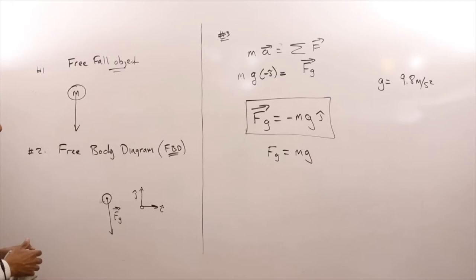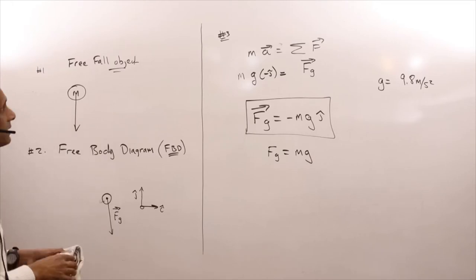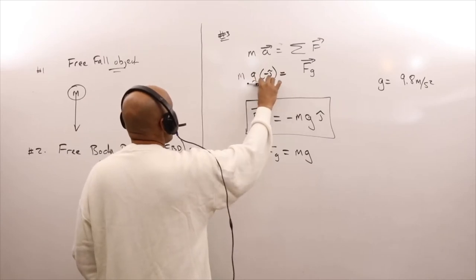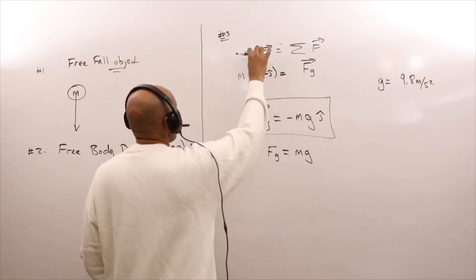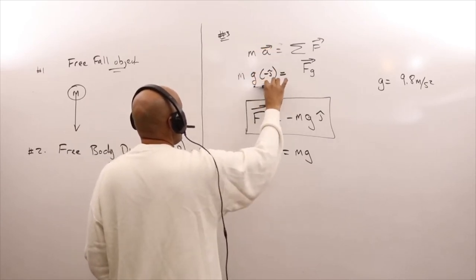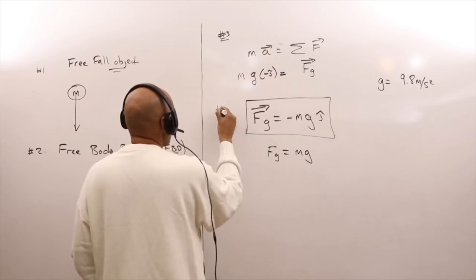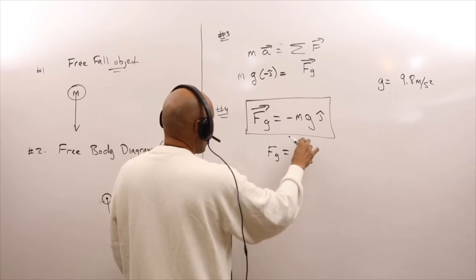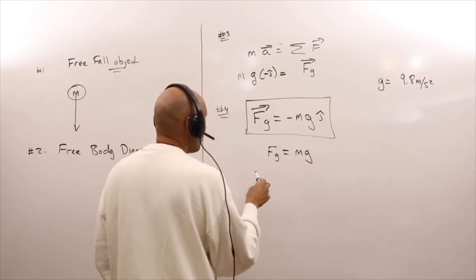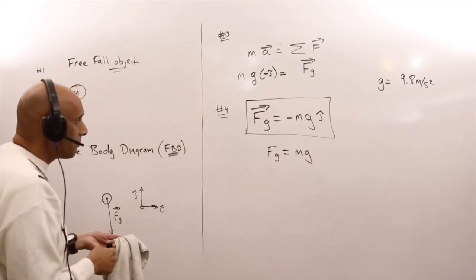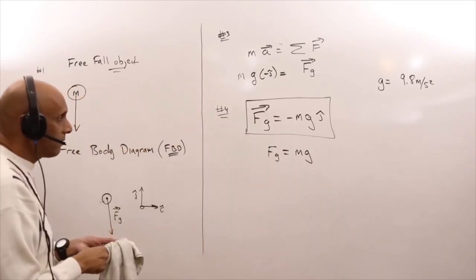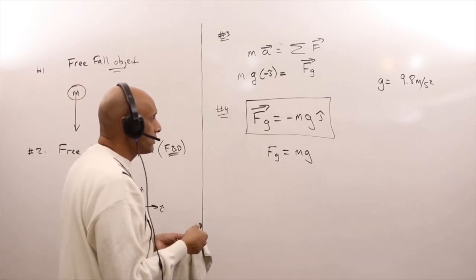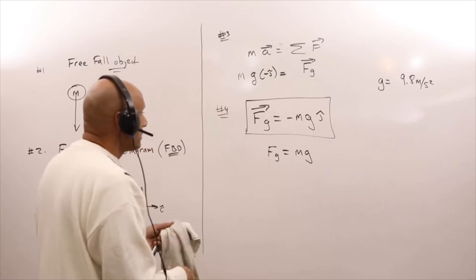Step four: solve. We can now say the force of gravity on an object of mass M is always Mg, where g is the gravitational acceleration. If you want just the magnitude, the force of gravity pulls an object down by Mg. We've used the free body diagram and the second law to derive this result.